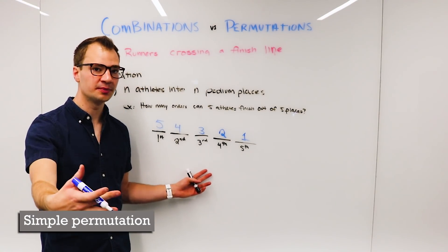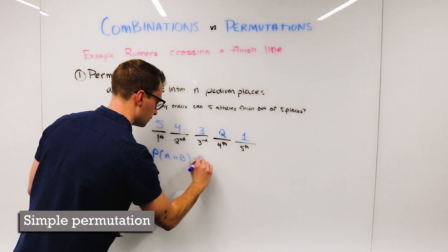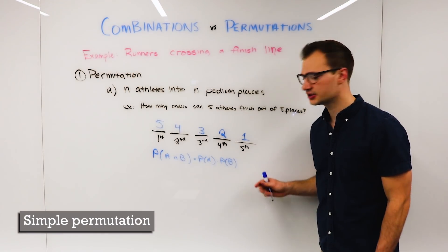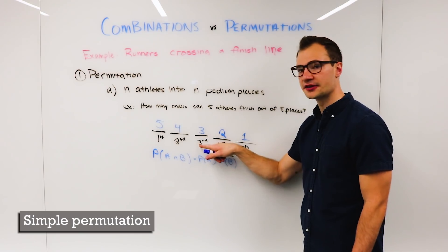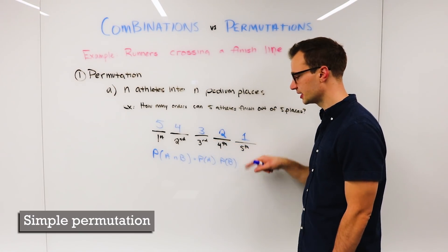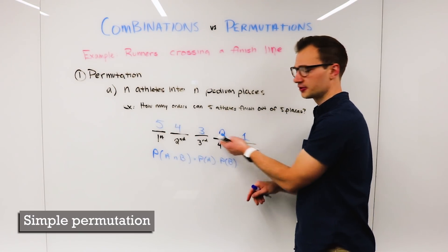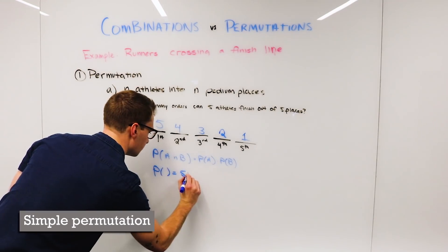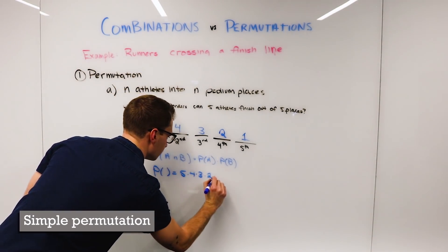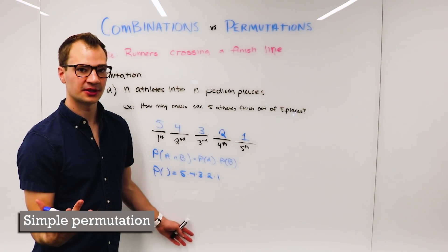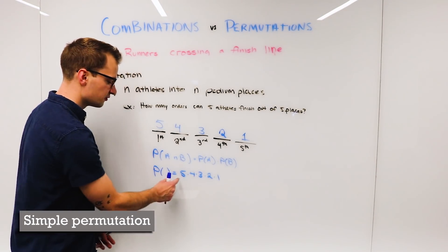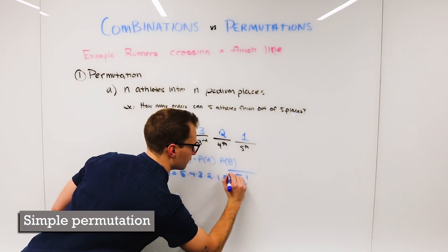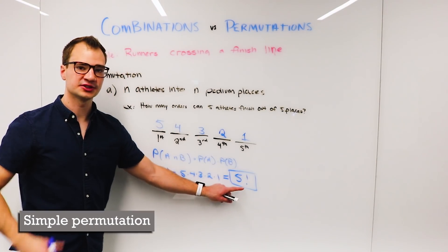Now to tie it back into probability, we use this theorem and we translate it here saying the probability of first place and second place and third place and fourth place and fifth place is going to be the product of all of these numbers. So five times four times three times two times one. And if you're familiar with combinations or permutations already, you'll know that we have a special notation for this. This is written as five with an exclamation point.